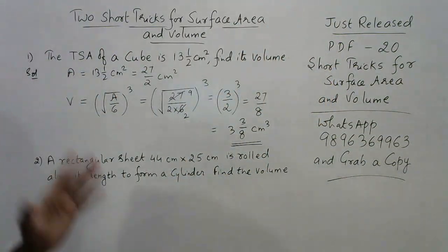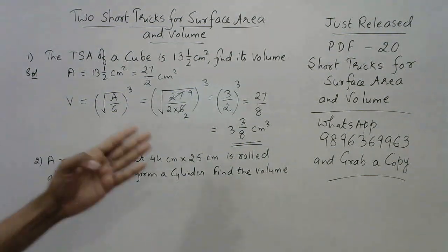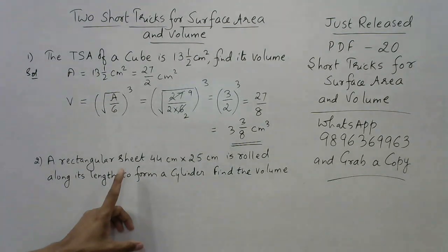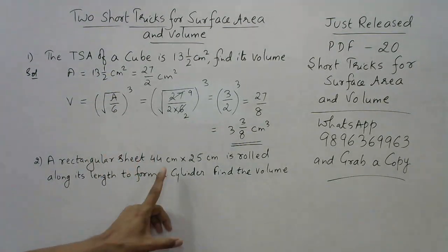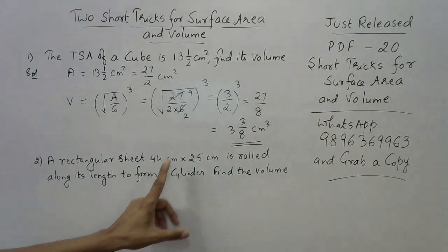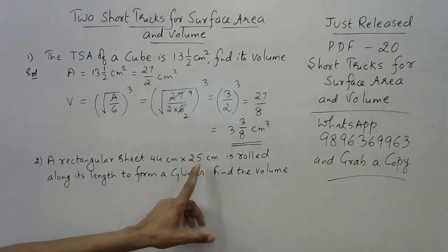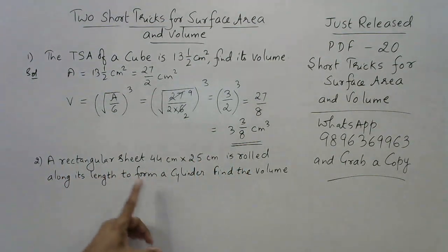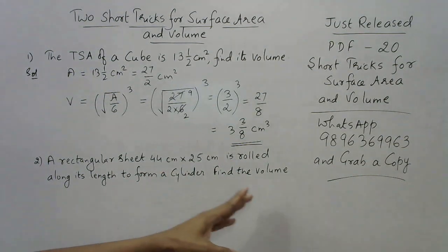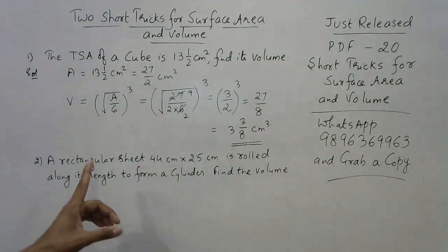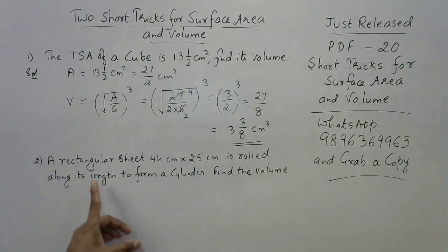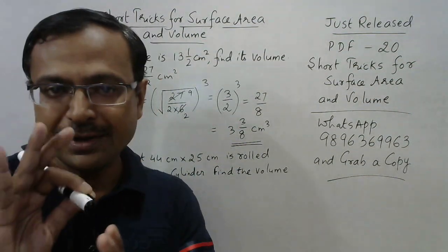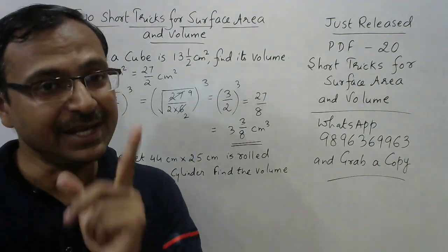Let's see the second one. A rectangular sheet with length given as 44 centimeters and breadth as 25 centimeters is rolled along its length to form a cylinder. We need to find the volume of the cylinder. The rectangular sheet is rolled along its length, meaning the length is folded and the breadth becomes the height.